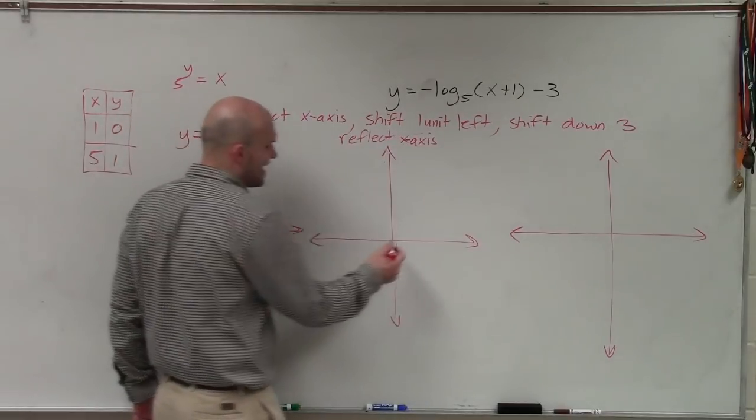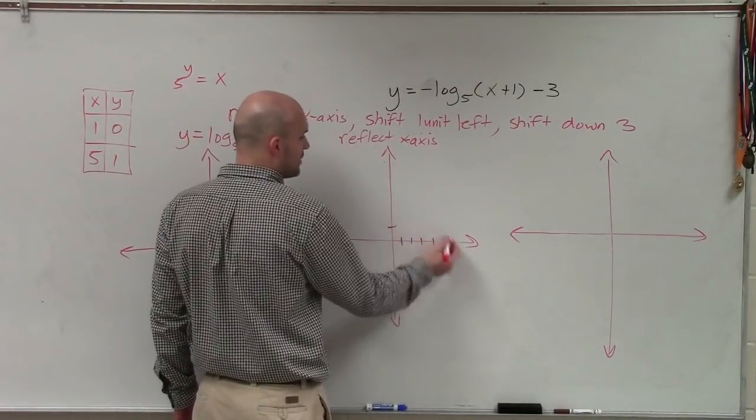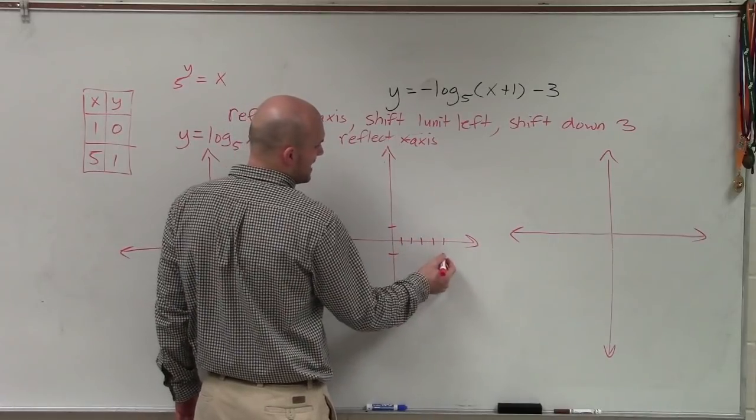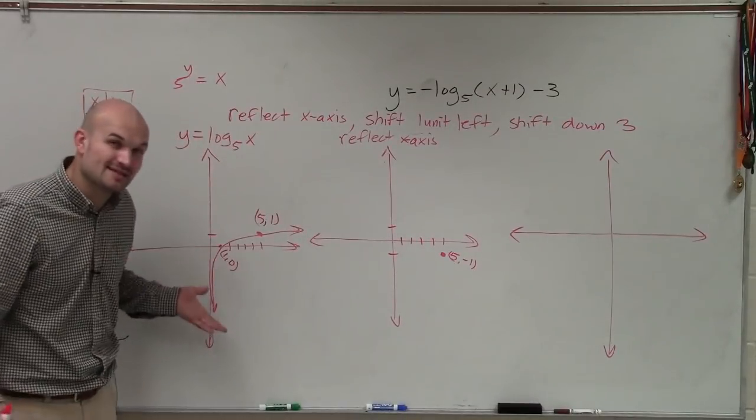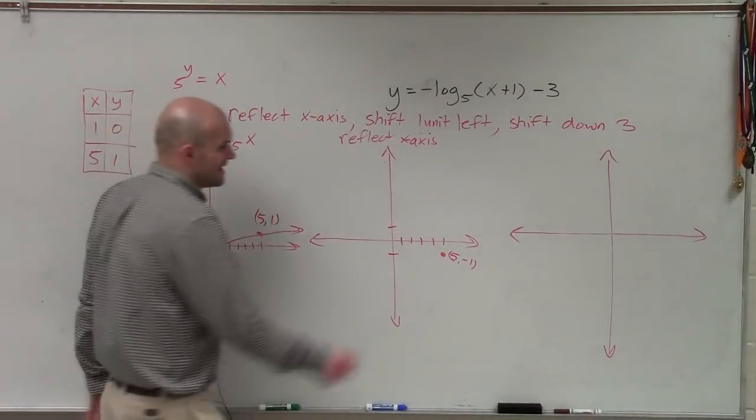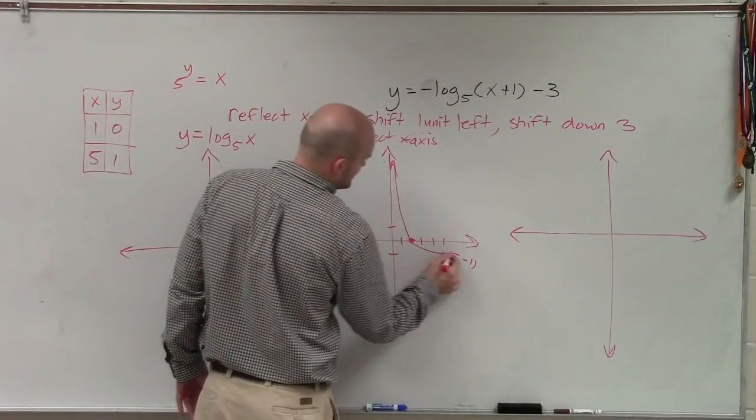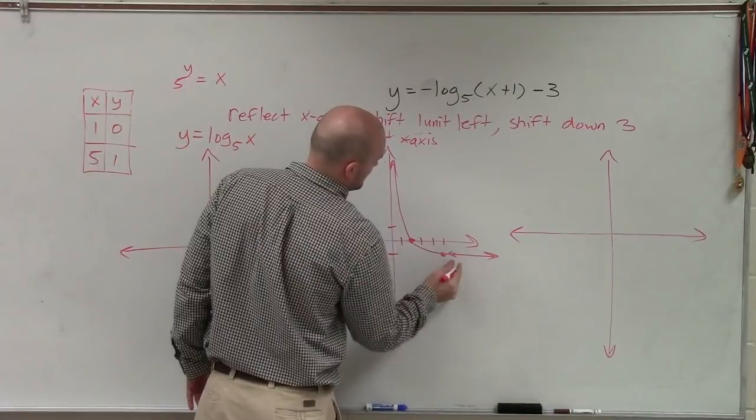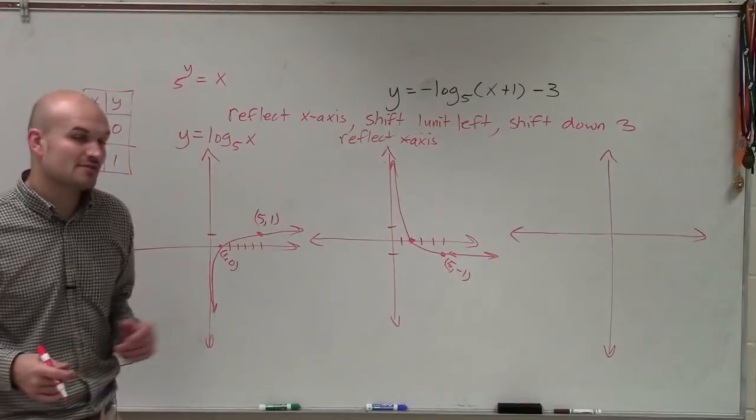So what that means is we're going to take this graph and now reflect it over the x-axis. So instead of going over 5, up 1, 1, 2, 3, 4, 5, instead of going over 5, up 1, now we're going to go over 5, down 1. And if we reflect the point 1 comma 0, since that's on the axis, that's not going to change. So now my graph is going to look something like this.